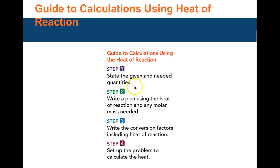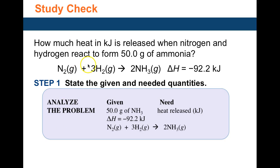For any problem: identify what's given, what's needed, and your plan. Convert mass to moles, use the heat of reaction as a conversion factor, and calculate. For example, 50 grams of ammonia is formed when nitrogen and hydrogen react. How many kilojoules are released? The balanced equation is given, and delta H is negative 92.2 kilojoules — it's exothermic.